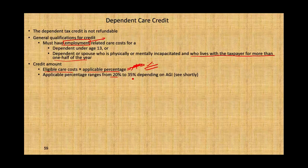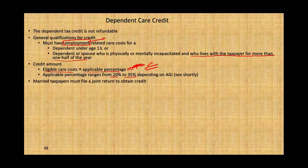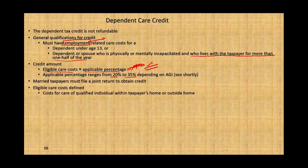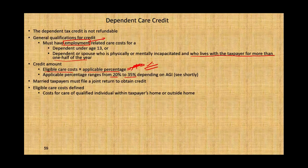The applicable percentage rates range from 20% to 35% depending on your adjusted gross income — we'll look at the table shortly. Married taxpayers must file a joint return to obtain the credit; if you're married filing separately, that credit is gone. Eligible care costs are defined as costs for care of a qualified individual either within the taxpayer's home or outside the home.